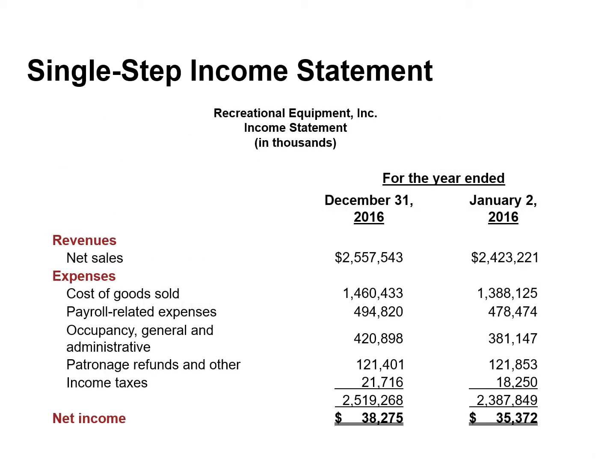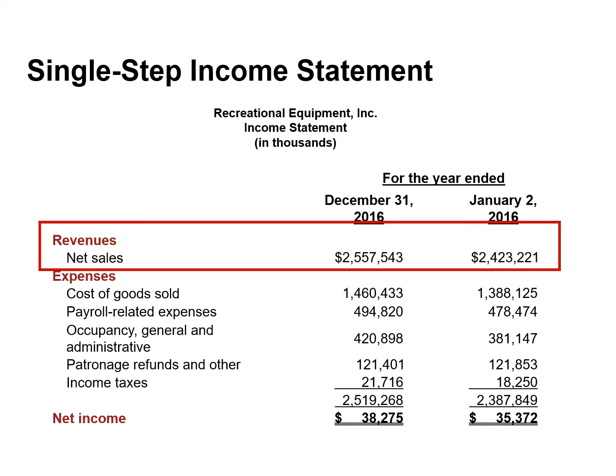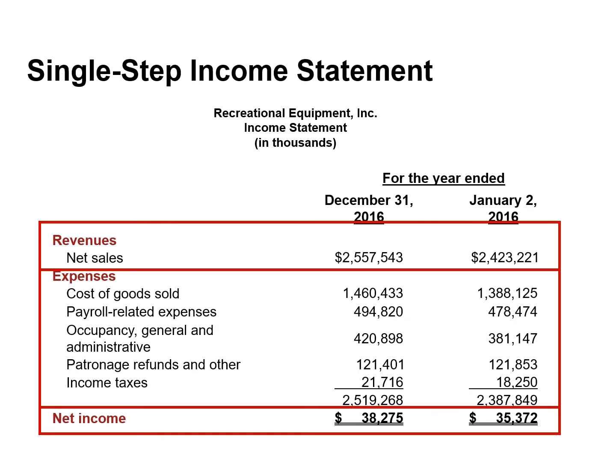In a single-step statement, all data are classified into two categories. The first category is revenues, which include both operating and non-operating revenues such as interest revenue and gain on the sale of equipment. The second category is expenses, which includes cost of goods sold, operating expenses, income tax expense, and non-operating expenses such as interest expense and loss on the sale of equipment. To determine net income or loss, we simply subtract total expenses from total revenues.